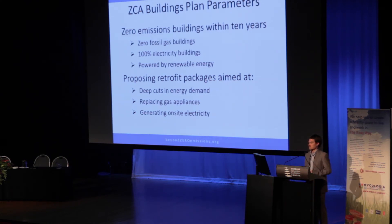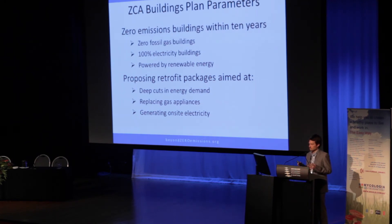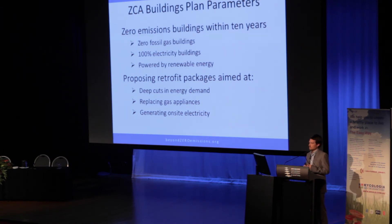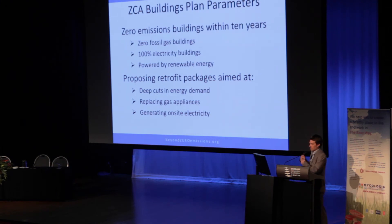In that context, to get zero emissions buildings within 10 years, the key task is actually to go to zero fossil gas usage in buildings. Gas does emit greenhouse gas emissions even though it's lower than brown and black coal. That means we want to have 100% electricity buildings from the grid, powered by renewable energy, both large-scale and small-scale. We're looking at measures which are widely applicable across the building stock — deep cuts in energy demand, replacing gas appliances and services, and generating energy on-site.